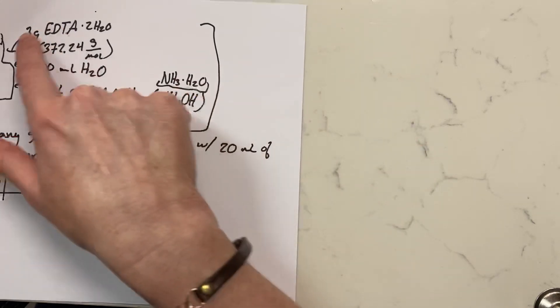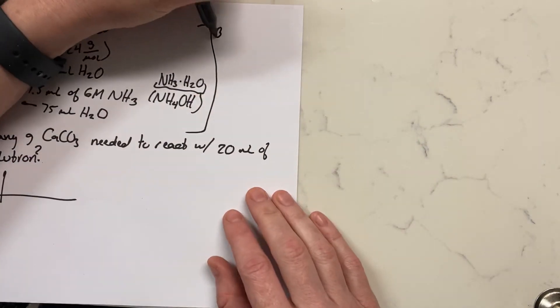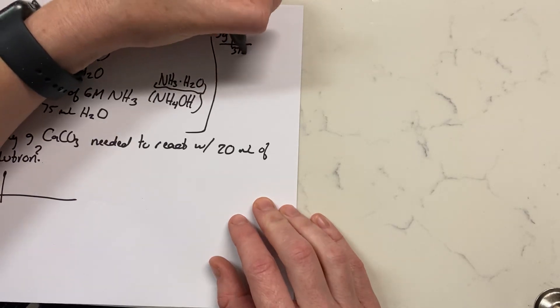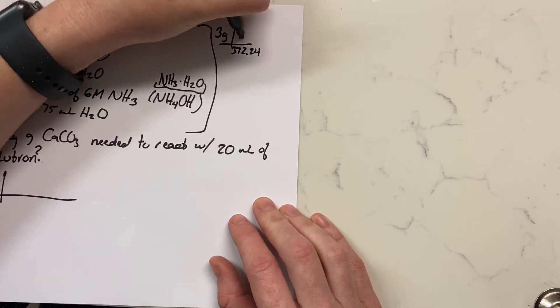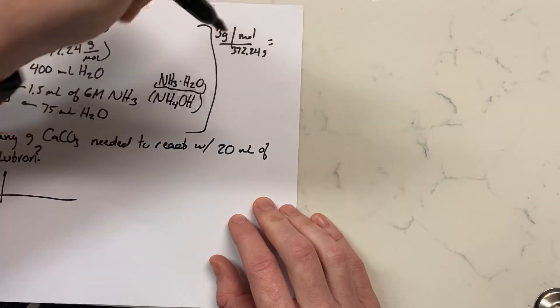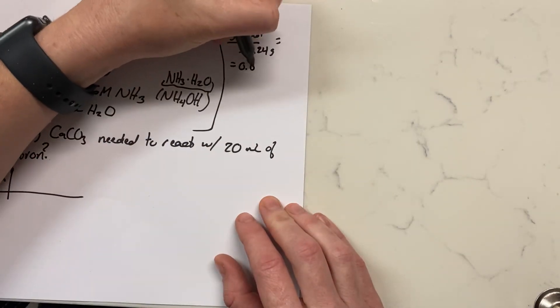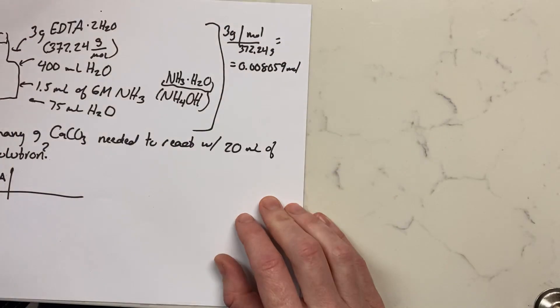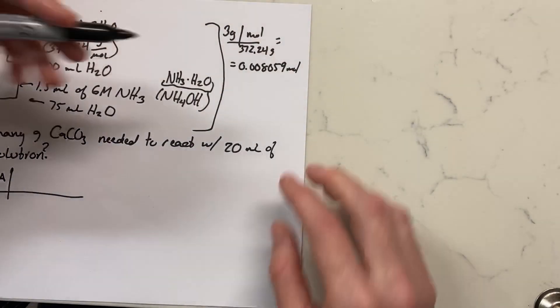Well, the concentration of the EDTA is simply the number of moles of EDTA divided by the liters. We know the moles because we know there were three grams, and we know that there are 372.24 grams in a mole. This gives us an answer of about 0.008059 mole of EDTA.